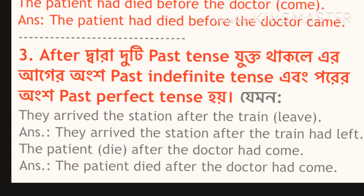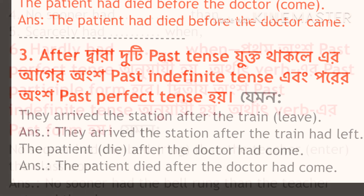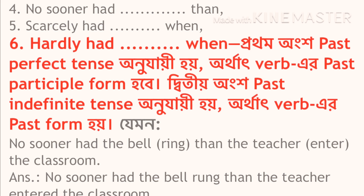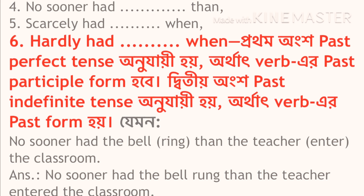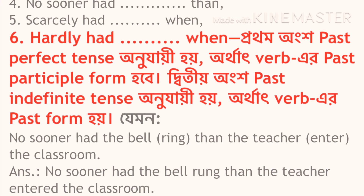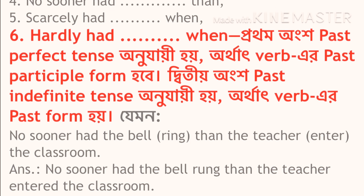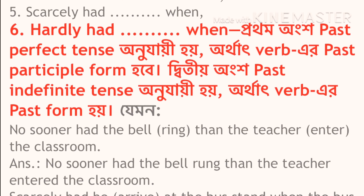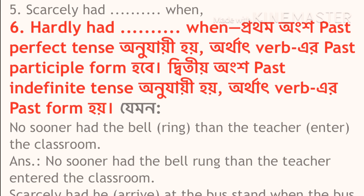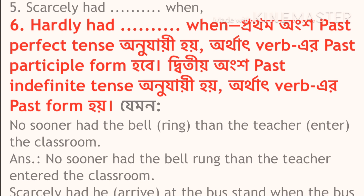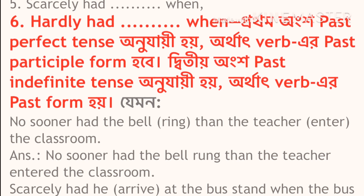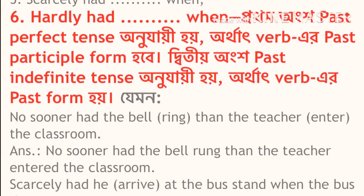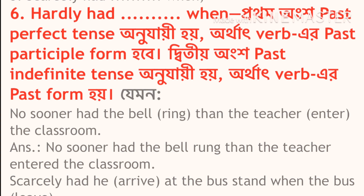Dear students, let's take a look at rules number 4, 5, and 6: 'No sooner had...than,' 'scarcely had...when,' and 'hardly had...when.' The first part of the sentence is in past perfect tense with the verb in past participle form, and the second part is in simple past tense. For example: 'No sooner had the bell rung than the teacher entered the classroom.' 'Ring' becomes 'rung' and 'enter' becomes 'entered' — simple past tense.